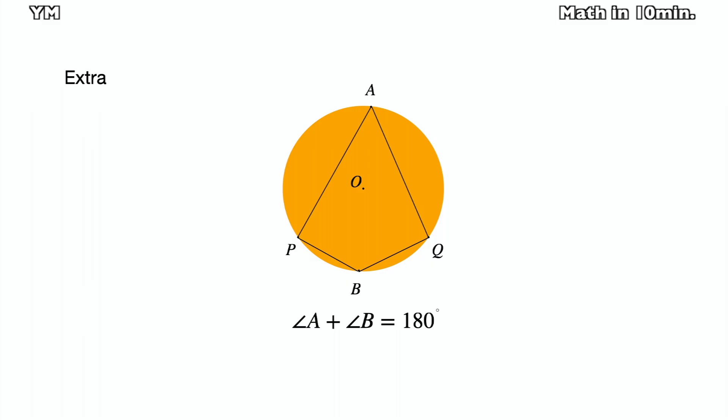Angle A plus B is 180 degrees since the addition of their center angle is 360 degrees.